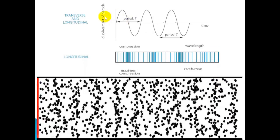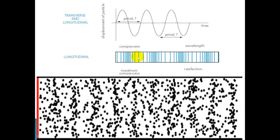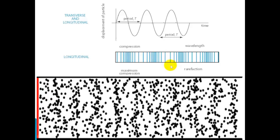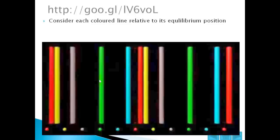Here we show the displacement of the particle during this transfer of energy, from the compression to rarefaction, compression to rarefaction. This is an excellent video which shows, with the different colours, the compression and the rarefaction. You can basically consider each colour line relative to its equilibrium position. For example, the green is very close to its equilibrium position, the blue is somewhat displaced, and the red is a little less displaced. We can show them by representing them with vectors.